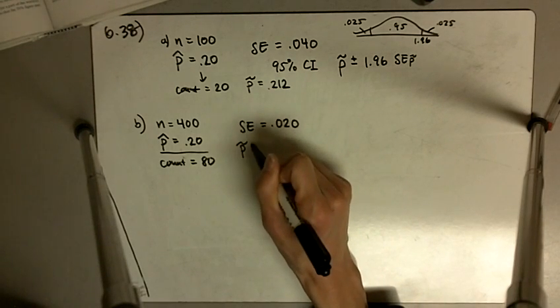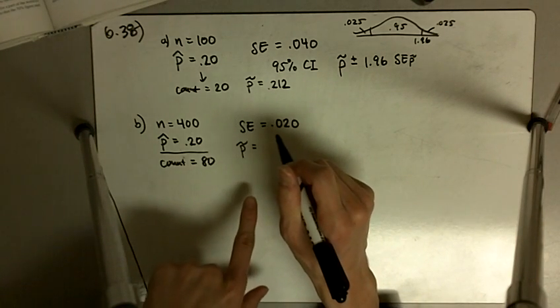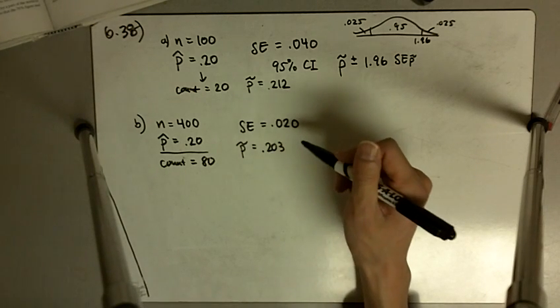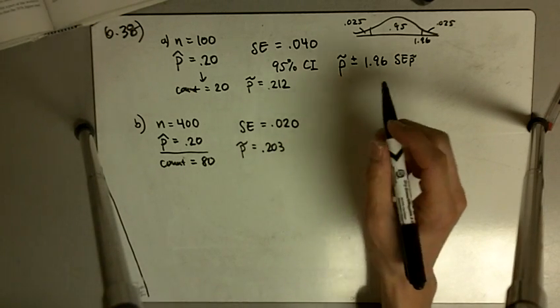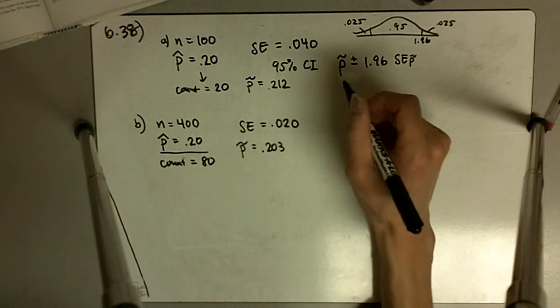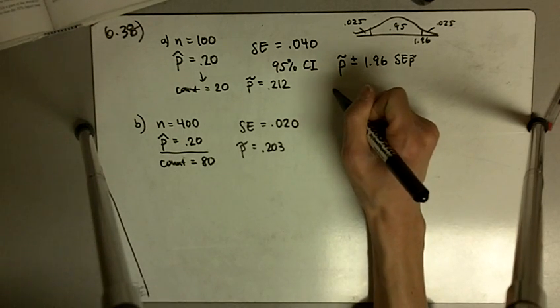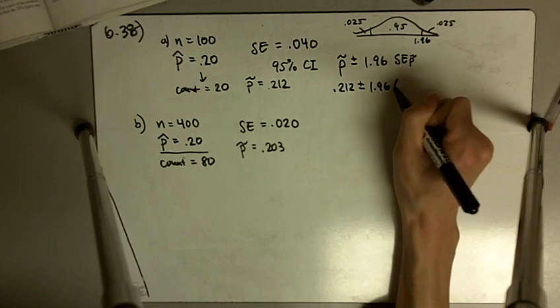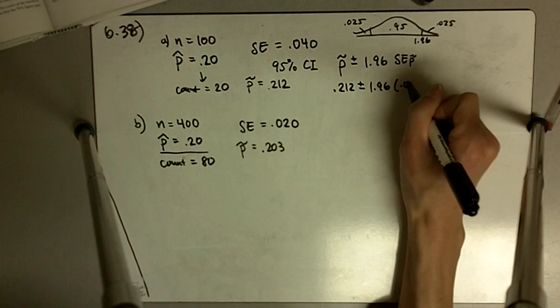And let me also write P̂ for n equal to 400 is 0.203. So these were calculated in the previous problem, 637. So in this case, we've got P̂, so I'm going to put 0.212 plus or minus 1.96 times our standard error of 0.040.